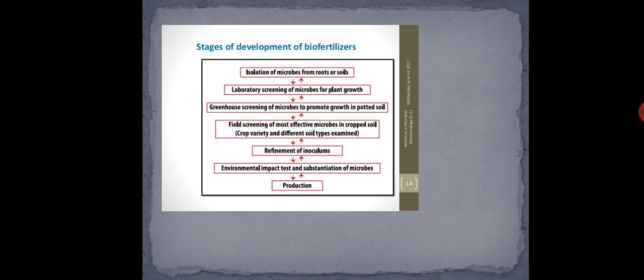For example, we will consider cyanobacteria. To make a biofertilizer from cyanobacteria, first we isolate the microbes from the roots or the soil, because we have seen that bacteria are found in the rhizosphere in a symbiotic association. We isolate that microbe from the root or the soil.